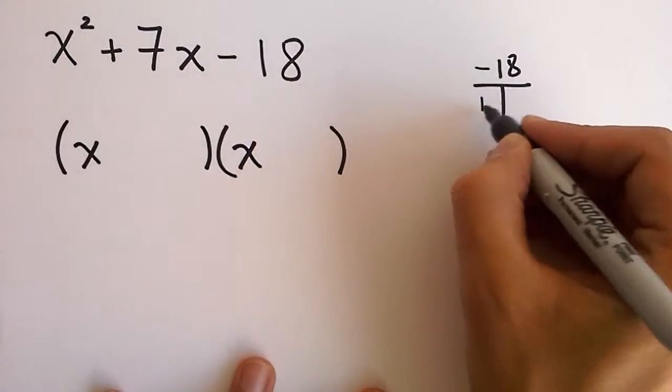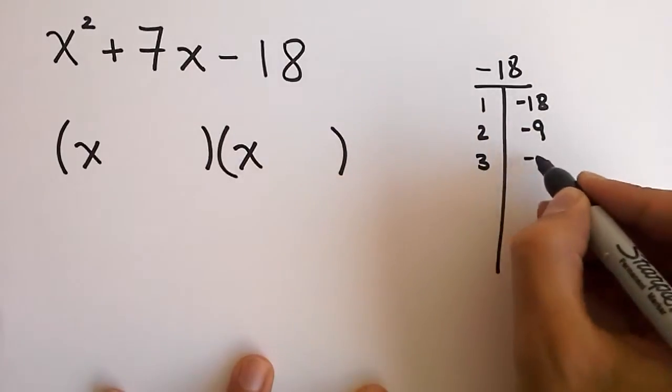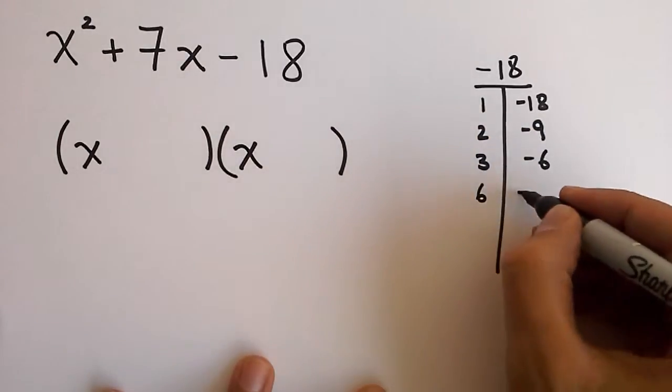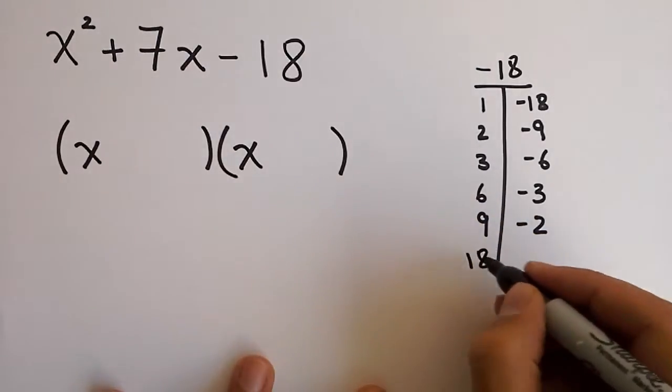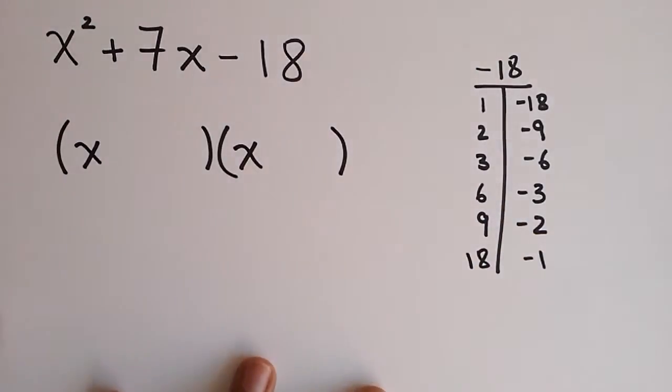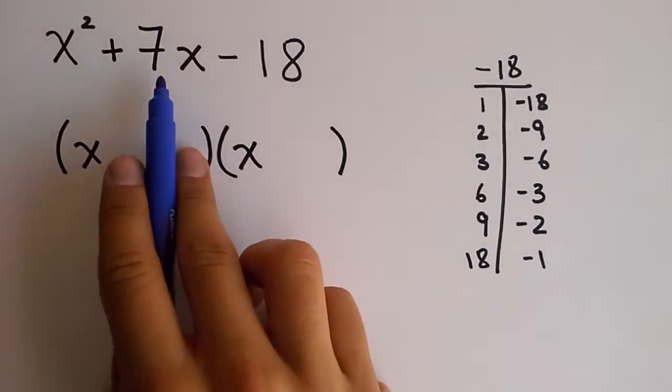So 1 and negative 18, 2 and negative 9, 3 and negative 6, 6 and negative 3, 9 and negative 2, 18 and negative 1. To determine which of these six pairs you have to use, you use exactly the same test. You want to obtain a negative 7.